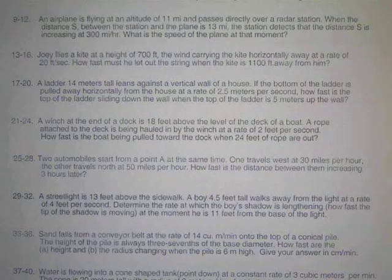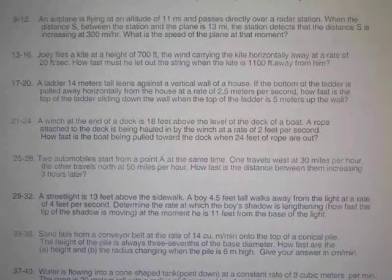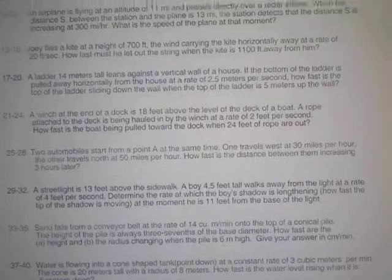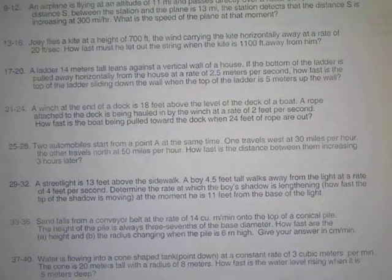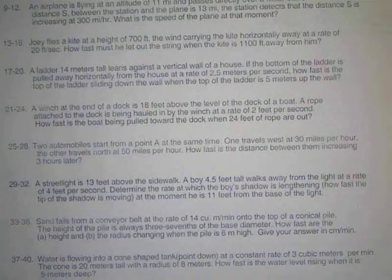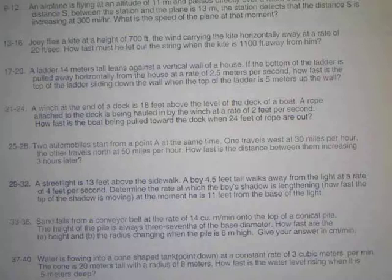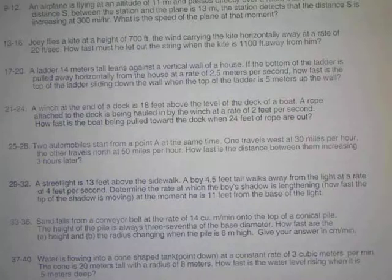Here's an example for problems 21 through 24 on your worksheet. A winch at the end of a dock is 18 feet above the level of the deck of a boat. A rope attached to the deck is being hauled in by the winch at a rate of 2 feet per second. How fast is the boat being pulled towards the dock when 24 feet of rope are out?